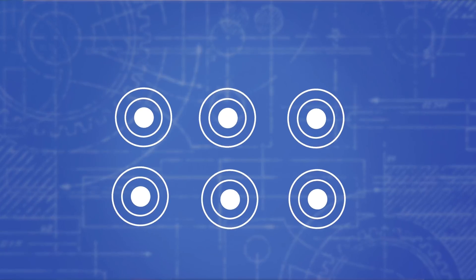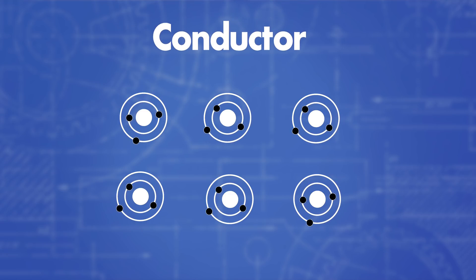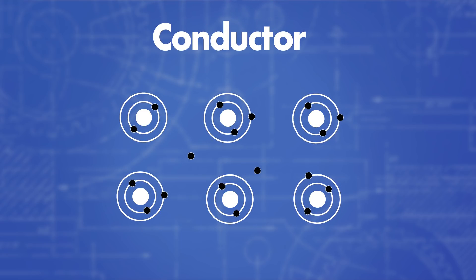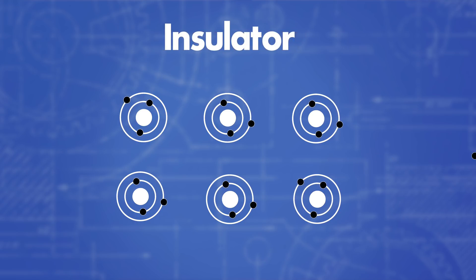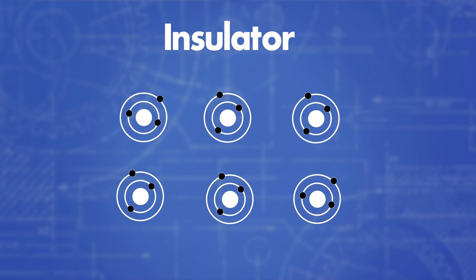First off, let's look at the differences between conductors and insulators. In conductors, electrons can flow freely, thus making an electrical current. This happens because the outer electrons of those conductors are not bound very tight, so they can move around. In insulators, however, these electrons are tightly bound to the nucleus and can't move, so they can't conduct an electrical current.